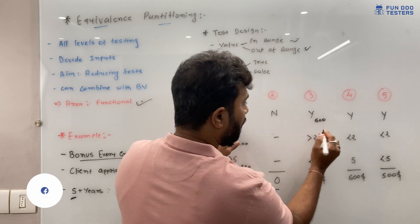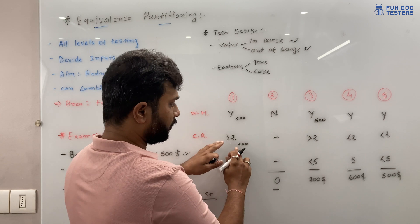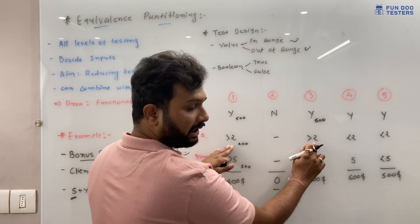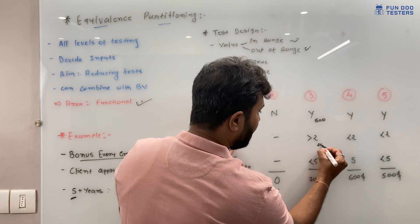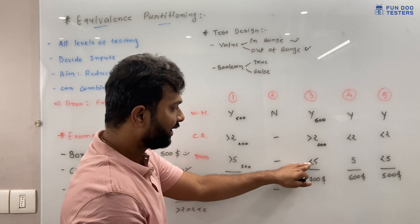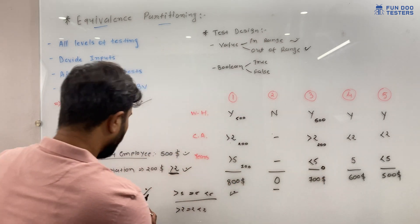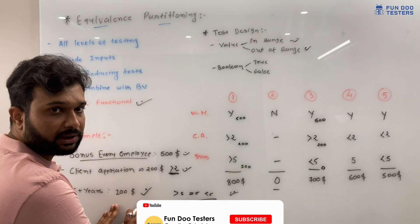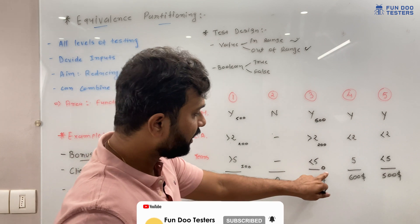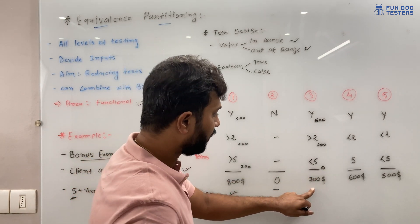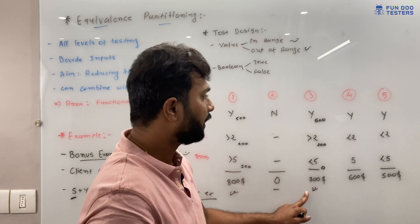Scenario 3: Work history is true, so they get $500 yearly bonus. They have received more than two client appreciations, so they get $200. However, they have not completed five years, so the five-year condition gives $0. In total, they receive $700 as a yearly bonus.